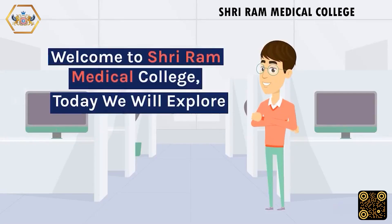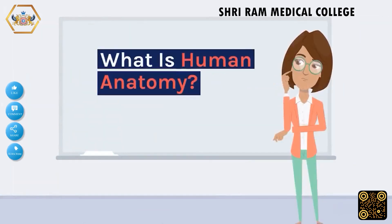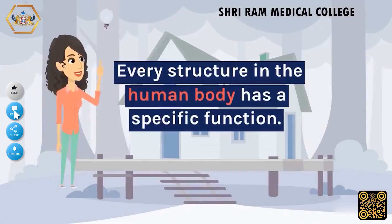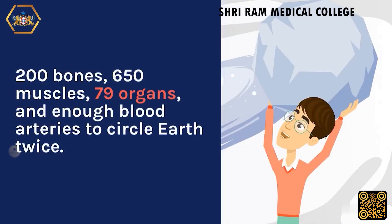Welcome to Shriram Medical College. Today we will explore what is Human Anatomy. Every structure in the human body has a specific function: 200 bones, 650 muscles, and 79 organs.